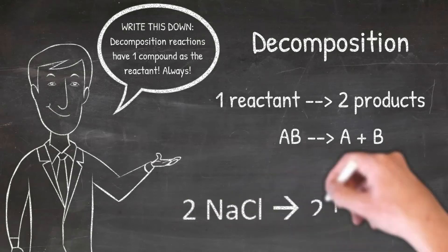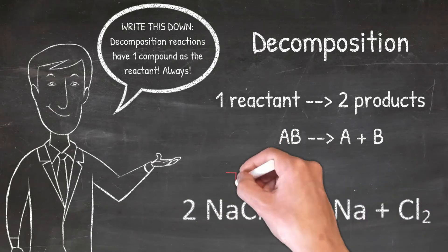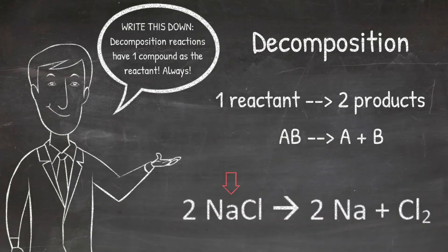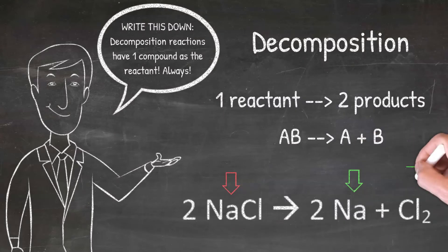The important thing to notice about a decomposition reaction is that it has one compound as the reactant. You can see here in the example that there is one compound NaCl on the left side of the equation and two products Na and Cl2 on the right side of the equation. Whenever you have one reactant and two or more products, you have a decomposition reaction.